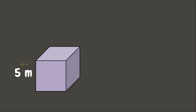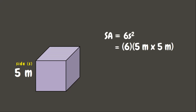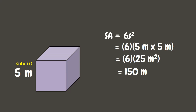Now let us have another example. Again we have here a cube, but this time its sides measure 5 meters. Let us solve for its surface area. The formula is 6s², so that will be 6 times 5 meters squared, which is 5 m × 5 m = 25 square meters. Then 6 × 25 = 150 square meters. That is the surface area of our cube.